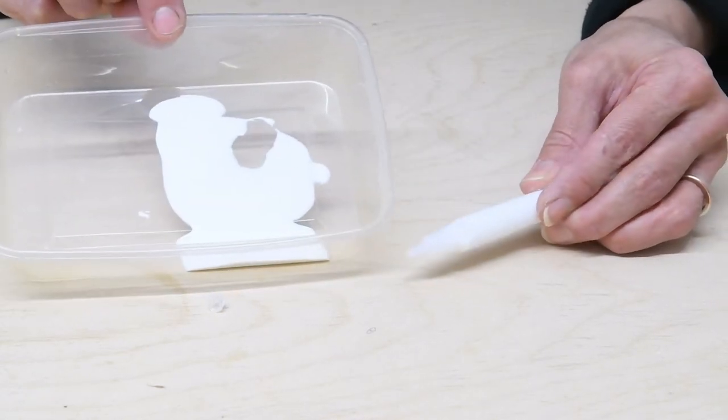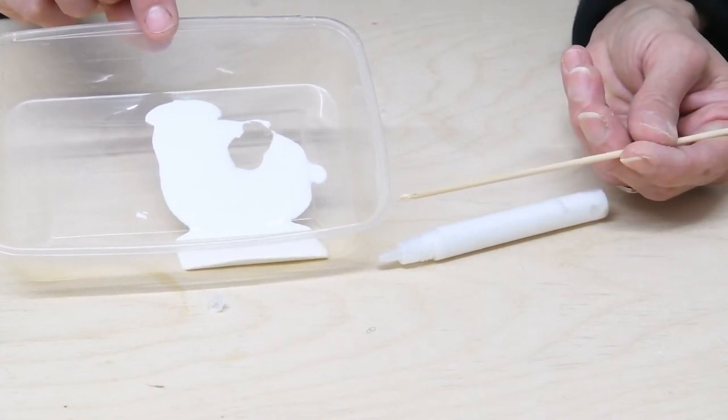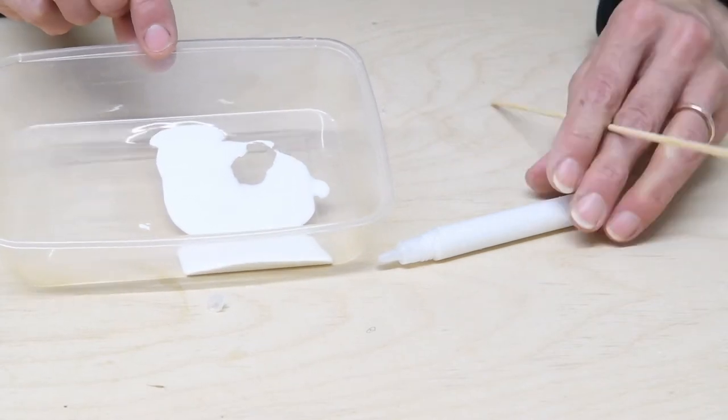Personally I like to put it all in a tray and then use a bamboo skewer to dip into the glue. I find that's easier to control but it's up to you.